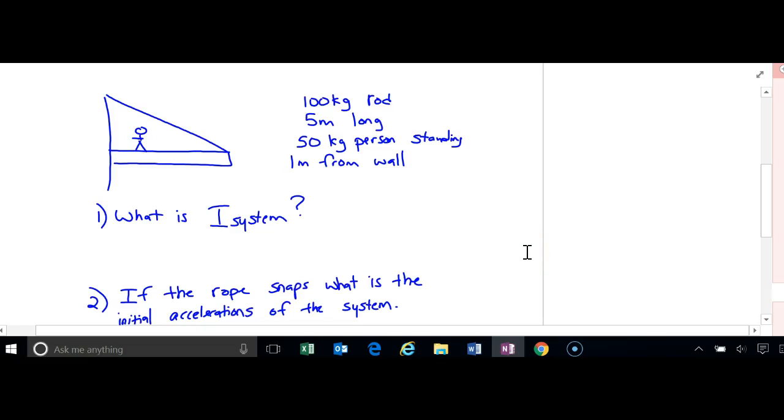Alright, in this problem, I want to find I of the system with a person on it. What we're going to do is, when this object is going to rotate, it is going to rotate about this point. So I have a rod rotating about this.